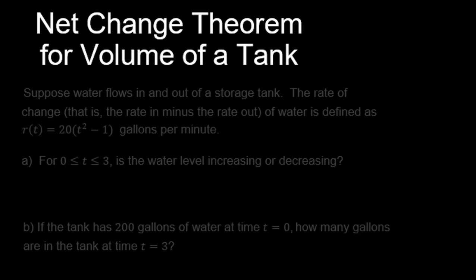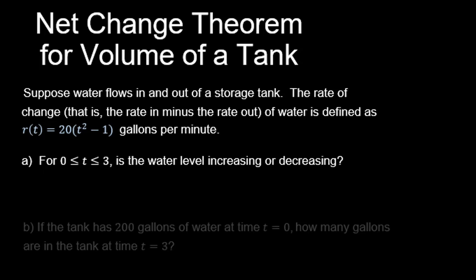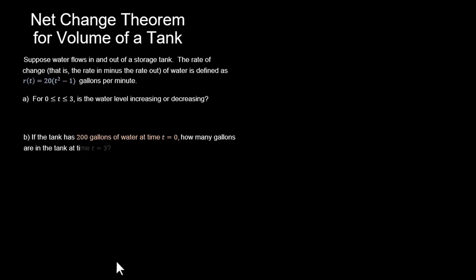And so here's the question that we're going to be working with. Suppose water flows in and out of a storage tank. The rate of change, that is the rate in minus the rate out of water, is defined as R(t) = 20(t² - 1) gallons per minute. And our first question, part A, is for 0 ≤ t ≤ 3, is the water level increasing or decreasing? Part B question, if the tank has 200 gallons of water at time t = 0, how many gallons are in the tank at time t = 3?